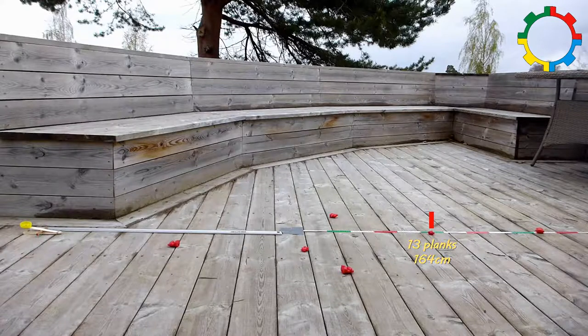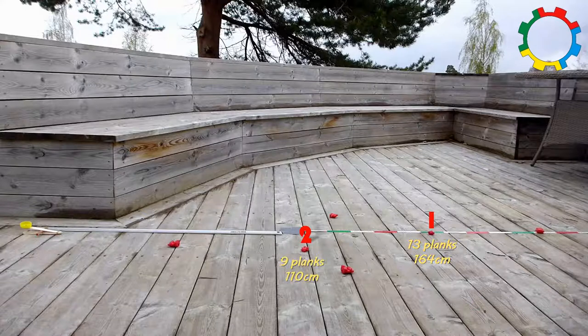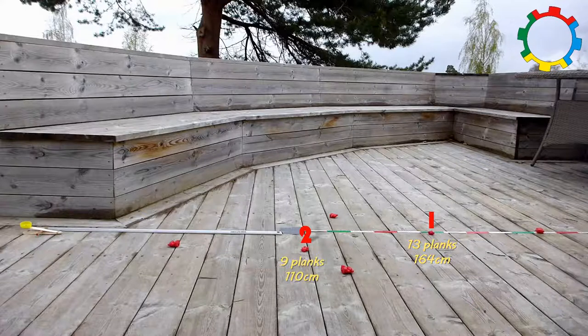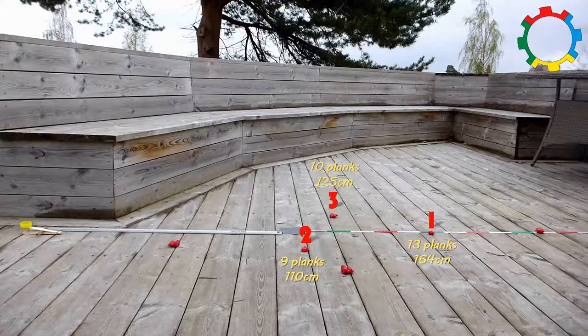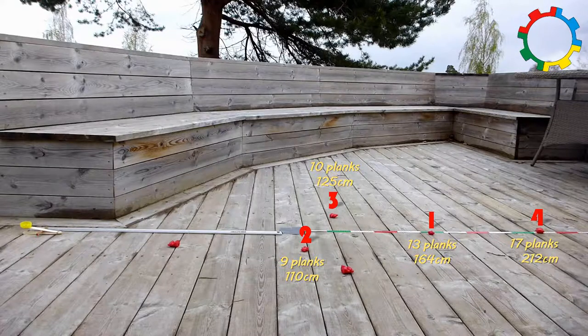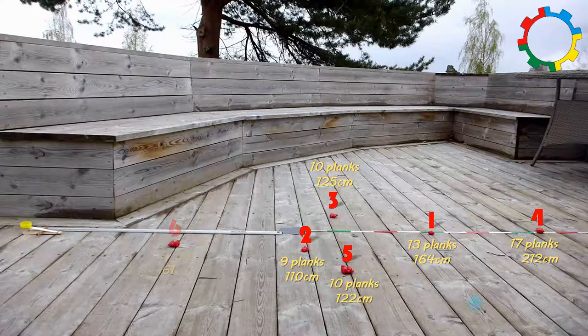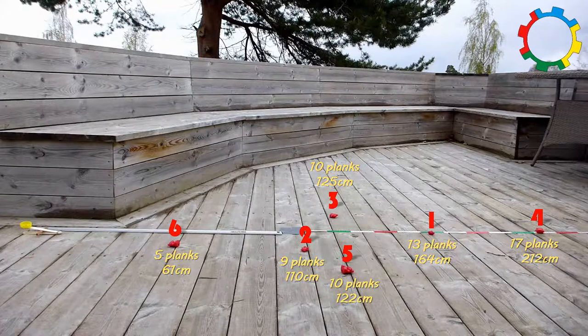The second bear traveled only 9 planks or 110 centimeters. The third one 10 planks, the fourth one 17, the fifth 10 planks as well, and the sixth and last one only 5 planks.